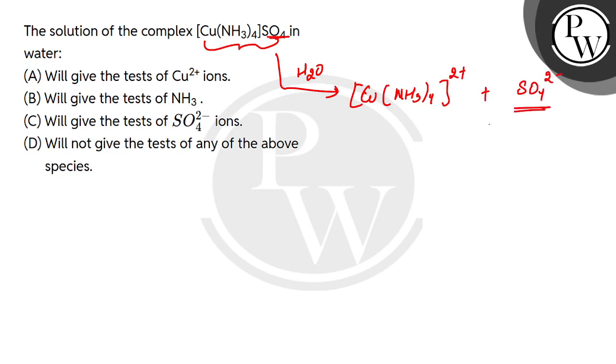So if we get sulfate as the anion, then it will give the test of anion, so that the C option is correct.